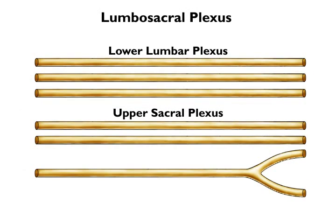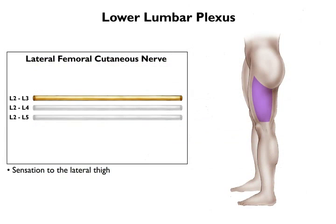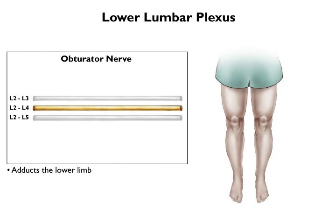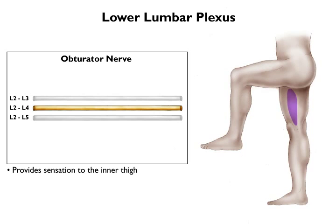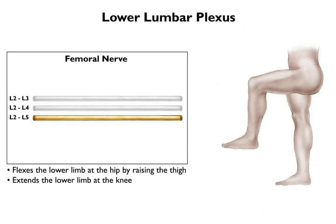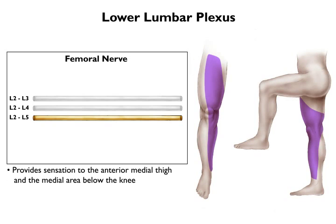Let's go through the movements and sensations we would test for each part of the lumbosacral plexus in order. Starting with the lower lumbar plexus: the lateral femoral cutaneous nerve provides sensation to the lateral thigh, in the area where a holster might rest. The obturator nerve enables you to adduct your lower limb and provides sensation to the inner thigh. The femoral nerve flexes the lower limb at the hip by raising the thigh, and extends the lower limb at the knee by straightening the leg. It also provides sensation to the anterior medial part of the thigh and the medial area below the knee, covering a distribution like the inseam of trousers.